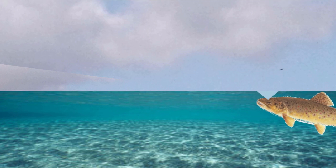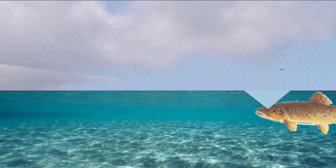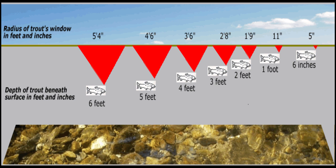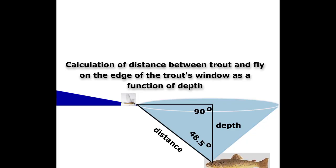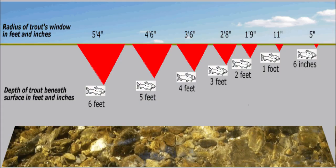We know that the trout's window has a width of 97 degrees, and that the radius of the trout's window is a precise function of the depth of the trout in the water.